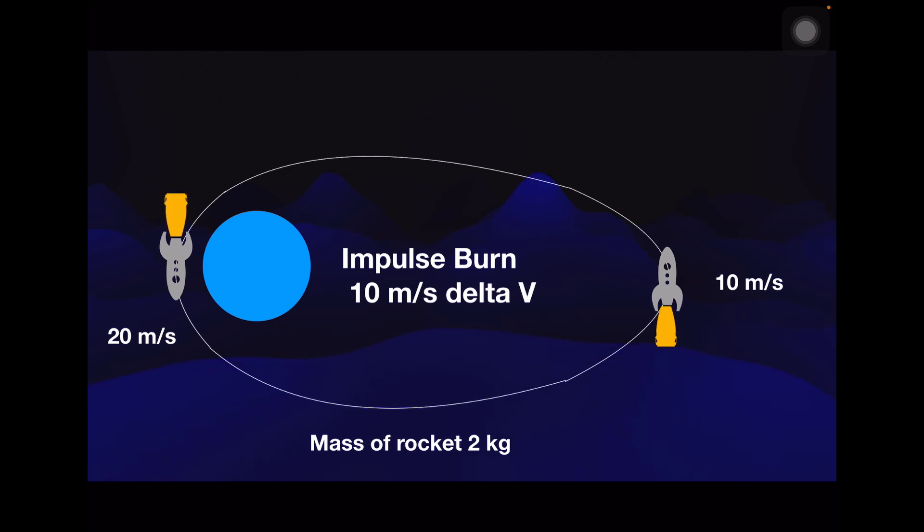Now let's take a very simple example. You've got something at perigee which is moving at 20 meters per second. Now when it moves out to its apogee, it's at 10 meters per second. And we're going to give an impulse burn at both places of 10 meters per second. So at perigee it increases from 20 to 30 meters per second, and at apogee from 10 to 20. And this mass, this rock, is very small. It's only two kilograms, and we'll explain why.